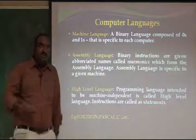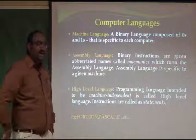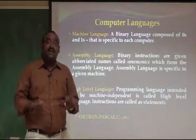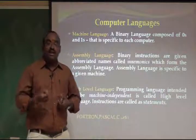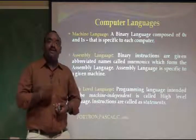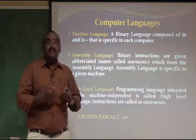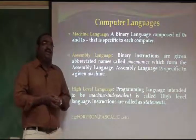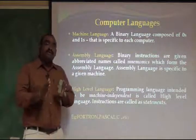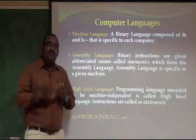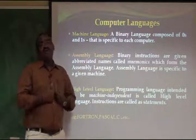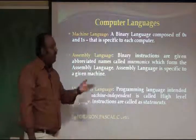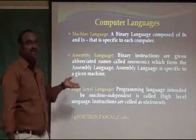The third one is high-level language. What we write today is called high-level language — a set of instructions that can be recognized and understood by the user as well. As a programmer, I must know what I am writing and what problem I am going to solve. When I understand that set of instructions, that is called a high-level language. It is machine independent. Examples include Fortran, Pascal, and C.